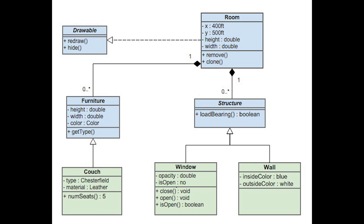Access methods can have access modifiers: minus, plus, and sharp signs that specify who can access them. Minus means it can only be accessed by the class itself, plus means it can be accessed by any other class, and sharp means it can be accessed by both the class and its subclasses — this enforces information hiding, ultimately for security. In UML, relationships are also called associations. Instead of using N for cardinalities, you use the asterisk sign to denote N. Associations can be unidirectional or bidirectional, showing how one navigates to another: bidirectional shows no arrows, while unidirectional shows an arrow pointing from one entity to another.